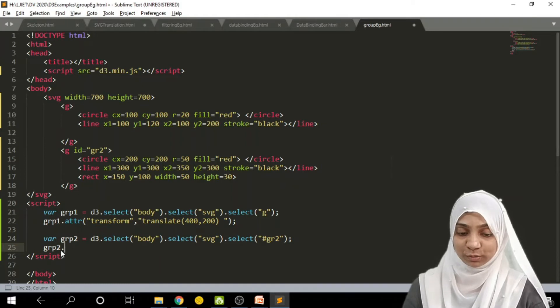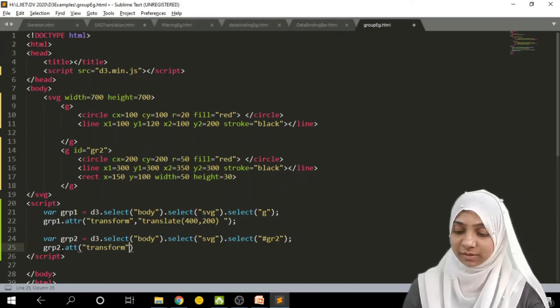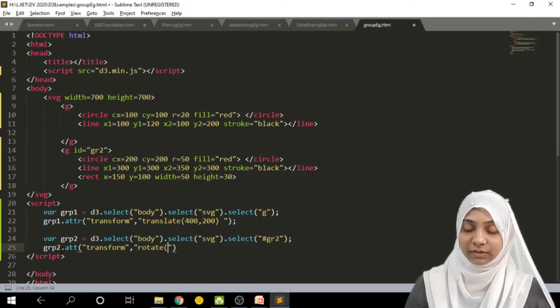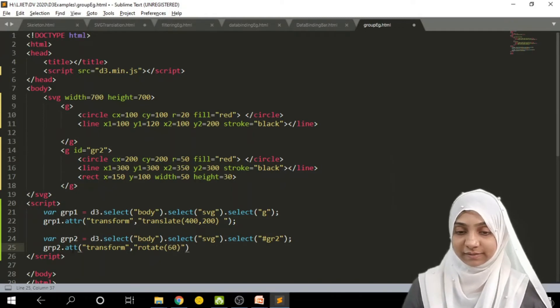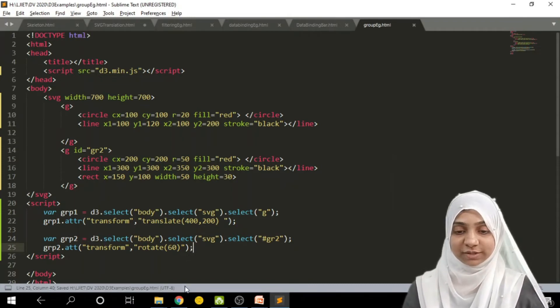Now, I will rotate this particular group. So group 2, its attribute is added for transformation. So I will write simply transform. And value of this transform is rotate. Let me rotate it in angle of 60. So here, let me save this document.